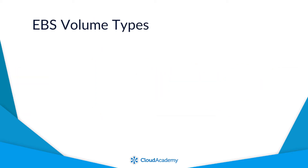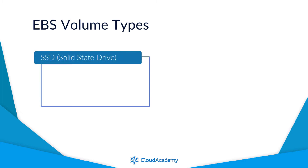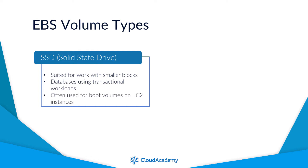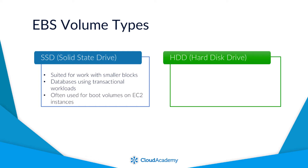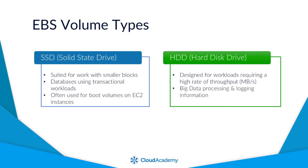There are two types of EBS volumes available, each with their own characteristics: SSD backed storage (solid state drive) and HDD backed storage (hard disk drive). This allows you to optimise your storage to fit your requirements from a cost to performance perspective. SSD backed storage is better suited for scenarios that work with smaller blocks, such as databases using transactional workloads, or often as boot volumes for your EC2 instances. Whereas HDD backed volumes are designed for workloads that require a higher rate of throughput in megabytes per second, such as processing big data and logging information — essentially working with larger blocks of data.